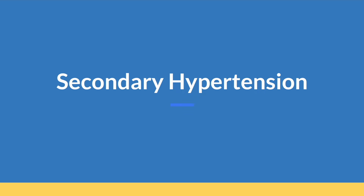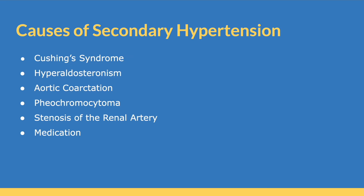This video is going to briefly go over the causes of secondary hypertension. Some of the main causes we are going to discuss today include Cushing syndrome, hyperaldosteronism, aortic coarctation, pheochromocytoma, stenosis of the renal artery, and medications.